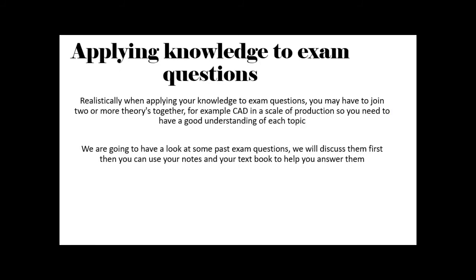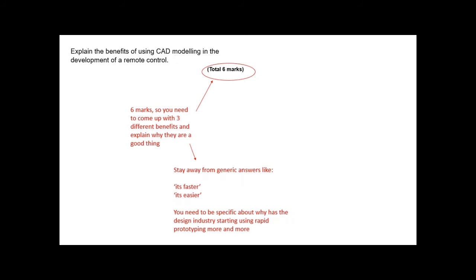So, with that, what we're going to have a look at now is some examples of questions that we'll talk through, we'll pause the video and have a go at answering. OK, so, explain the benefits of CAD modelling in the development of a remote control. So, 6 marks, so you've got 6 marks, so you need to come up with 3 different benefits, that gives you 3 marks, and then explain why they are a good thing. That gets you your second thing. So, 6 marks, so 3 points and 3 explanations. So, you need to stay away from generic answers, like it's faster, it's easier. Explain it in more detail, because you're not wrong, but that's not really an A-level style answer. You need to explain that in more detail. So, you need to be specific about why has the design industry started using rapid prototyping more and more. Why is it becoming the normal? So, can you pause the video, give yourself 6 minutes, use your notes, and then we'll go through the answer.